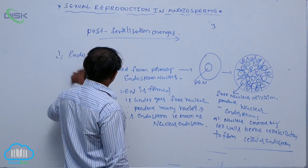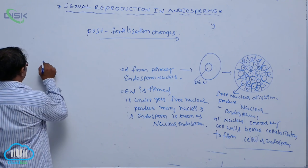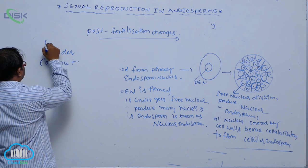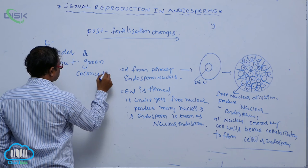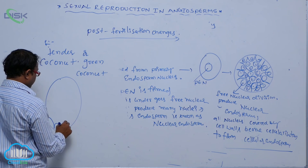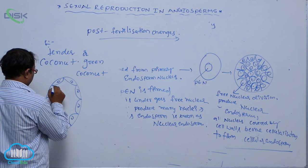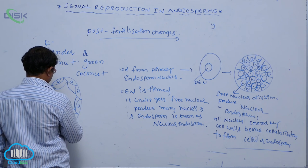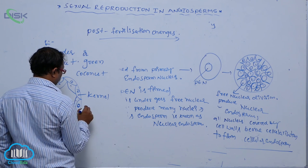For example, in tender coconut or green coconut. The outside is known as the kernel. It is known as the kernel. So that is the nucleus covered by cell wall. That is known as cellular endosperm.